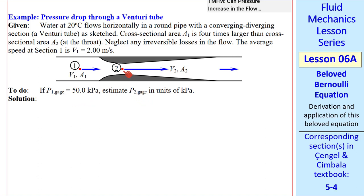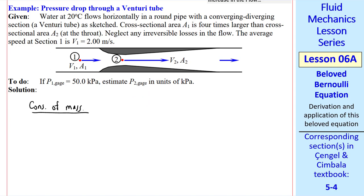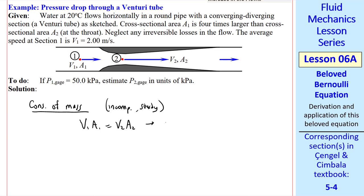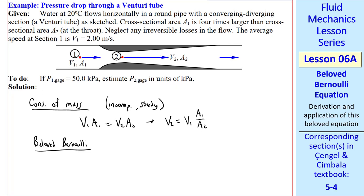I start with conservation of mass for the incompressible steady case. V1A1 must equal V2A2, which we can solve for V2. V2 is equal to V1A1 over A2. Now we apply beloved Bernoulli from 1 to 2. I'll use the pressure form.